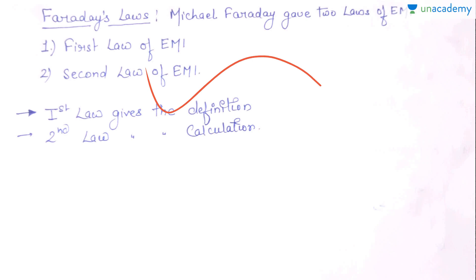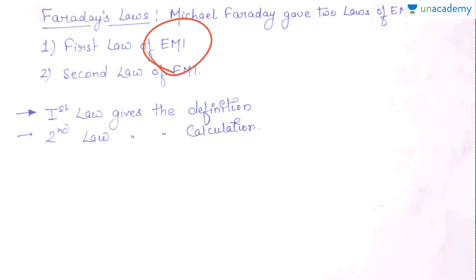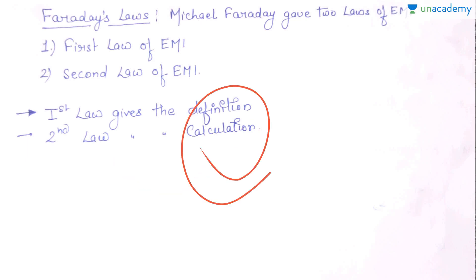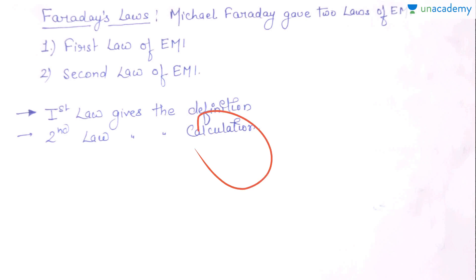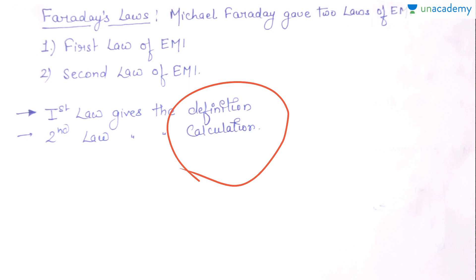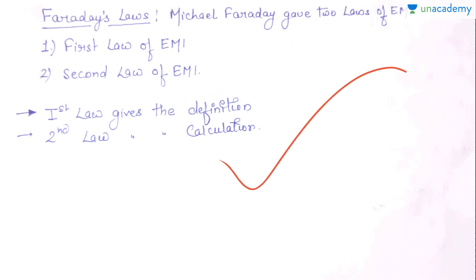The first law gives the definition of Electromagnetic Induction, which we studied in the introduction. The second law gives the calculation of the induced EMF — it basically gives the calculation of the induced EMF linked with a coil when there is a change in the magnetic flux through the coil. So: first law gives the definition, second law gives the calculation of the induced EMF.